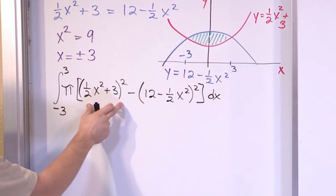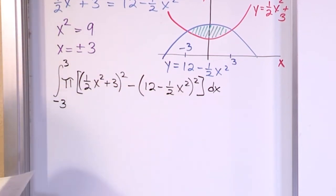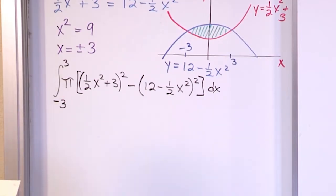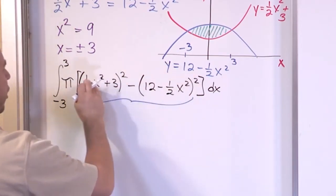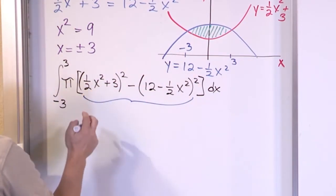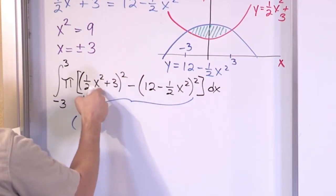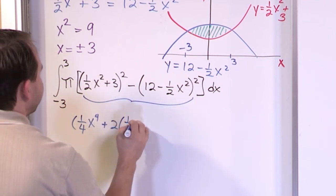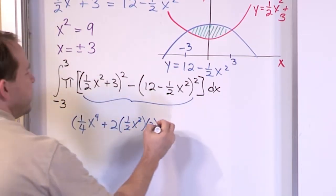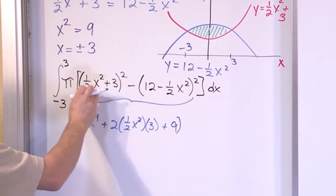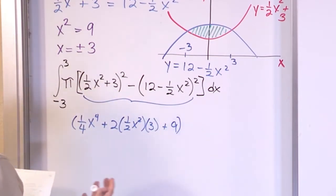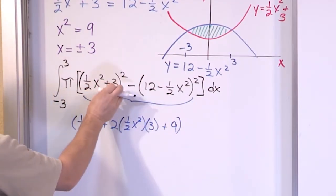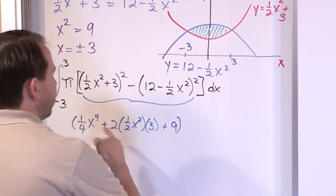There's no shortcut here — we have to expand the squared binomials. For the first term squared: (one-half x squared plus 3)² equals one-fourth x to the fourth, plus 2 times (one-half x squared) times 3, plus 9. Using the formula: first term squared, plus 2 times first times second, plus last term squared — that's what you should remember from algebra.